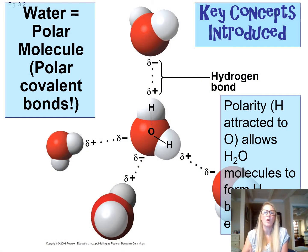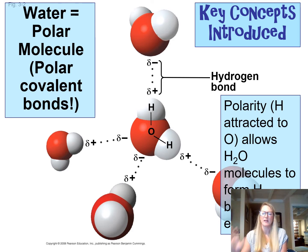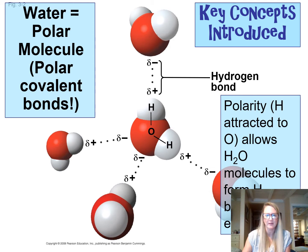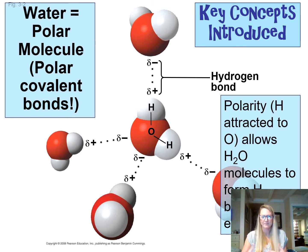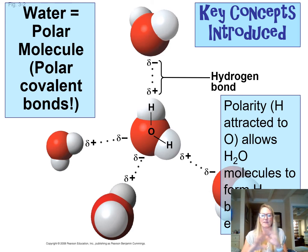One of the first things you should know about water is that it's a polar molecule. So what does that mean? Water is composed of two hydrogens and one oxygen — you've been learning about that since grade school. Because the electrons are being shared, we call that covalent bonding. The hydrogen and oxygen are sharing electrons, forming covalent bonds. However, the molecule is polar, meaning one of the elements is slightly pulling on the other element's electrons.